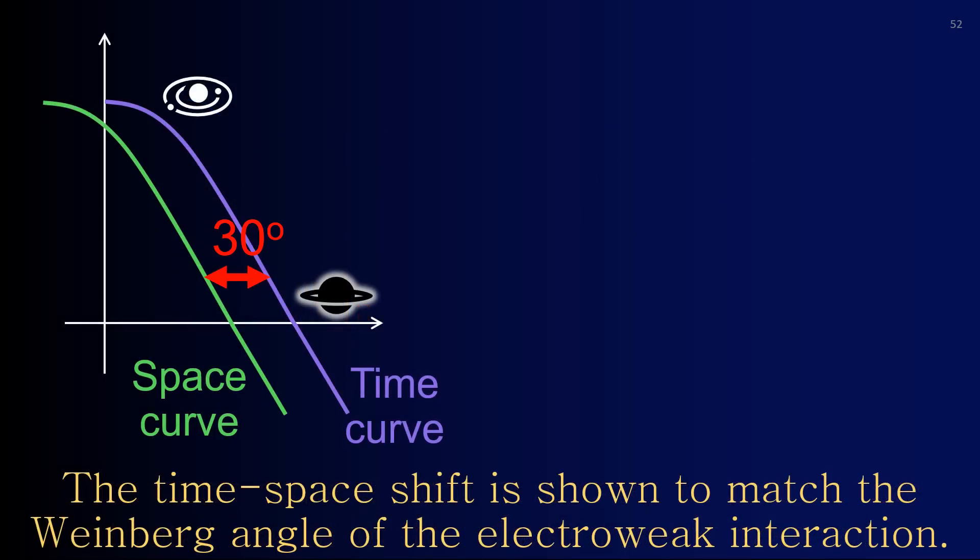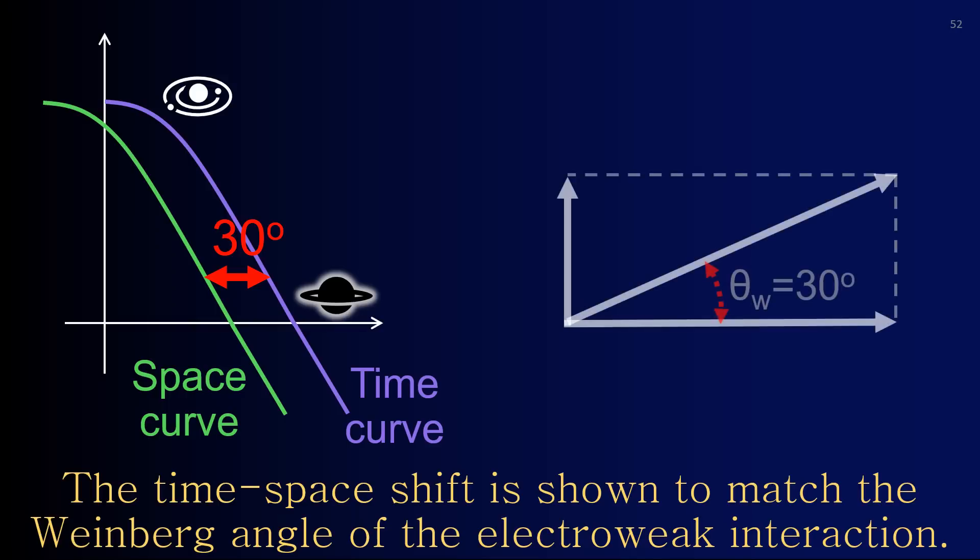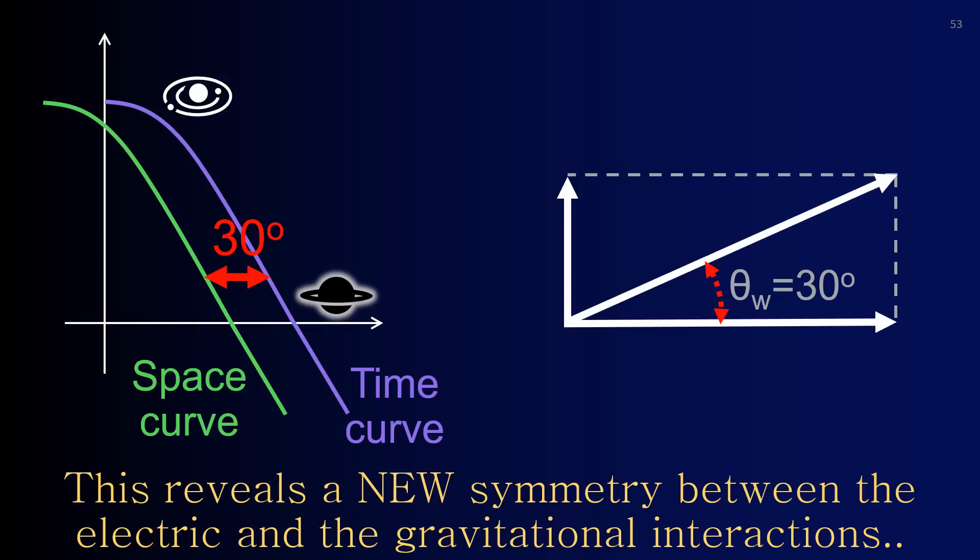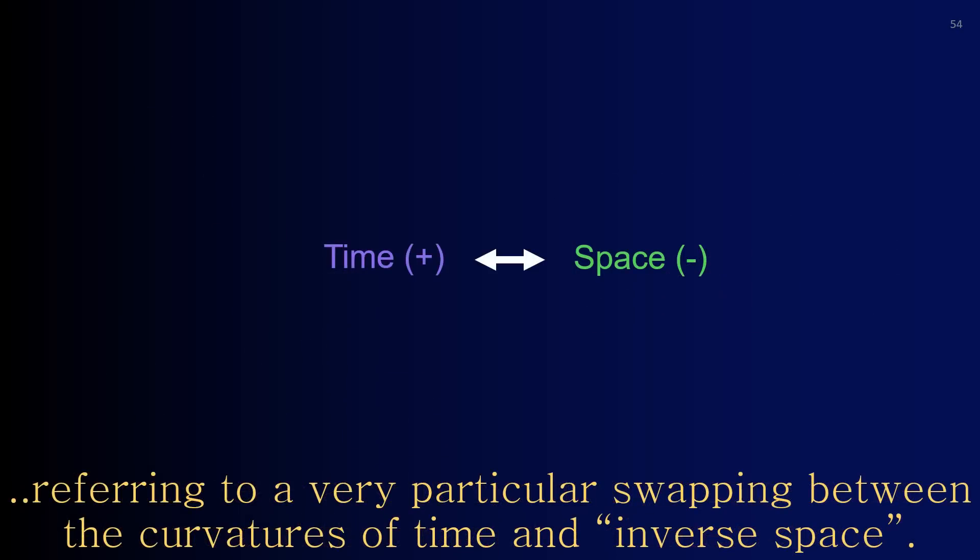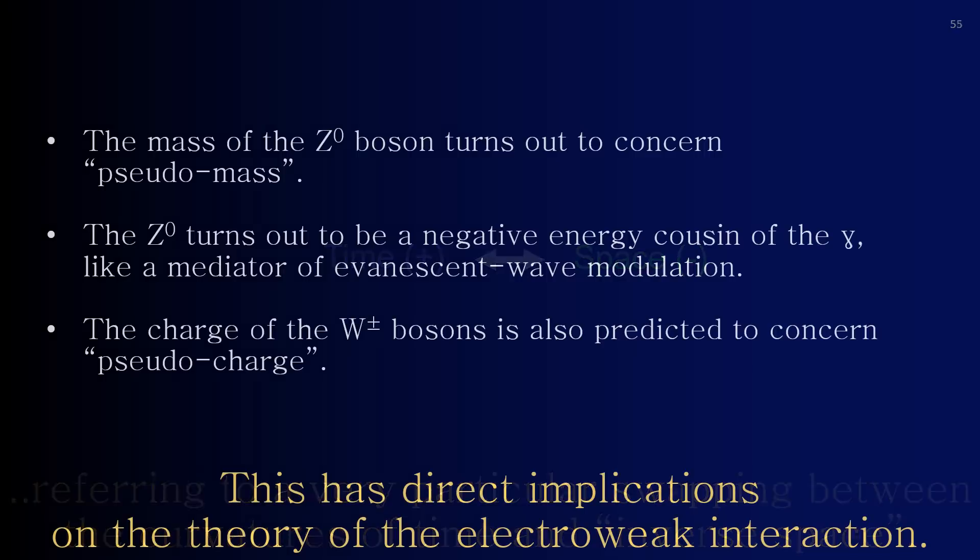The time-space shift is shown to match the Weinberg angle of the electroweak interaction. This reveals a new symmetry between the electric and the gravitational interactions, referring to a very particular swapping between the curvatures of time and inverse space. This has direct implications on the theory of the electroweak interaction.